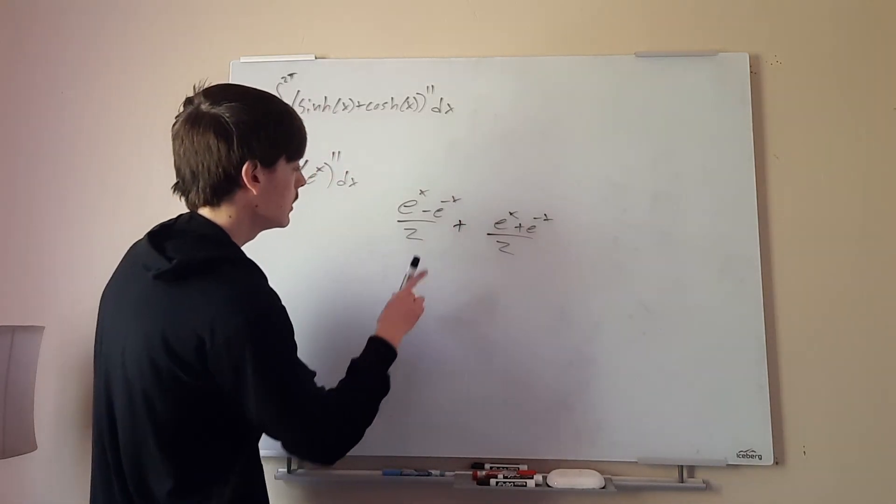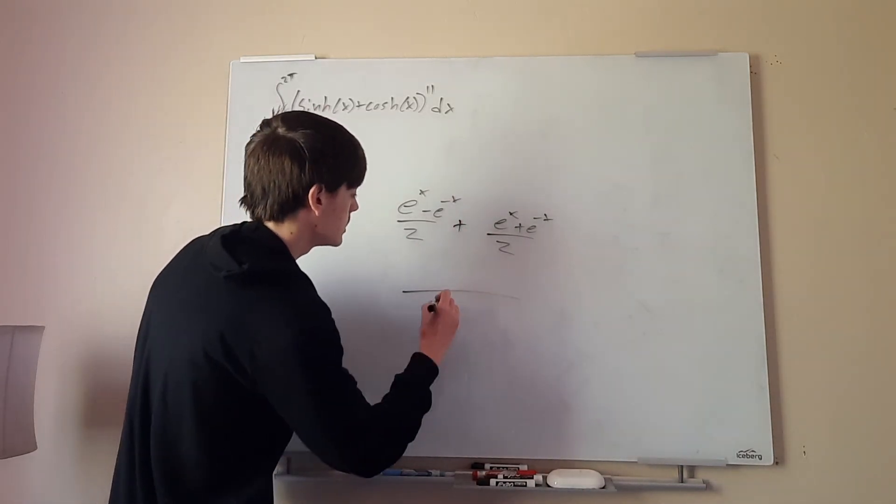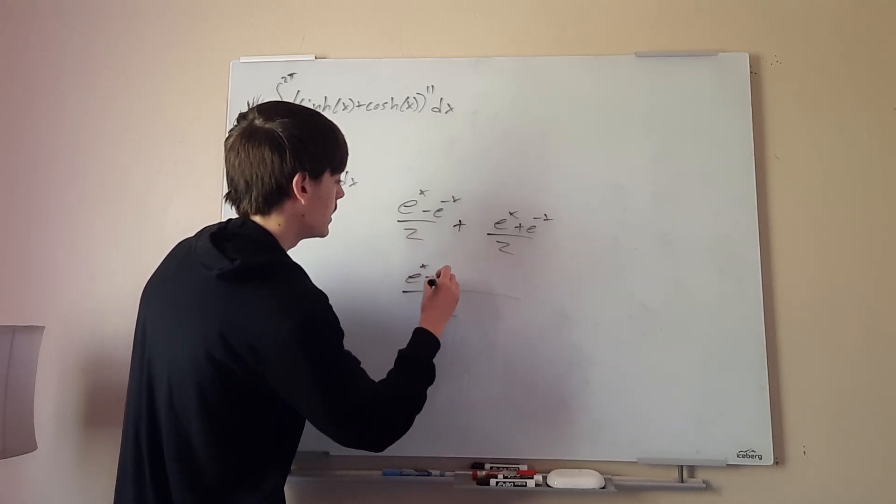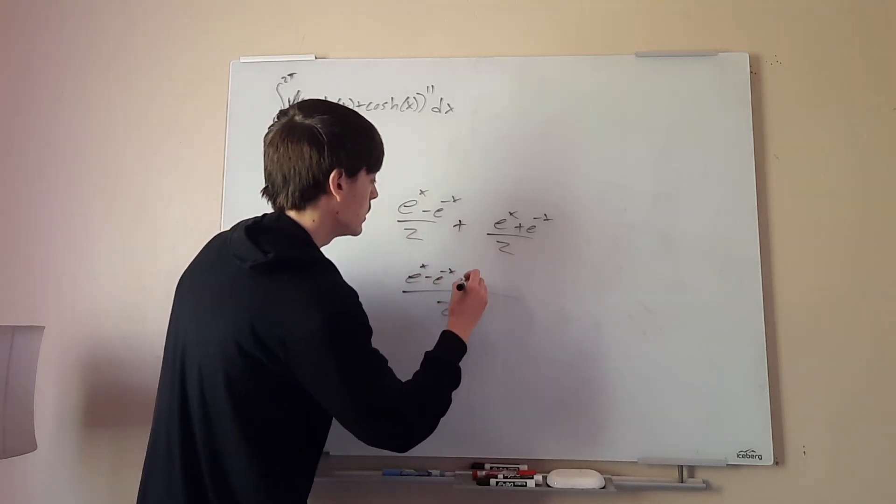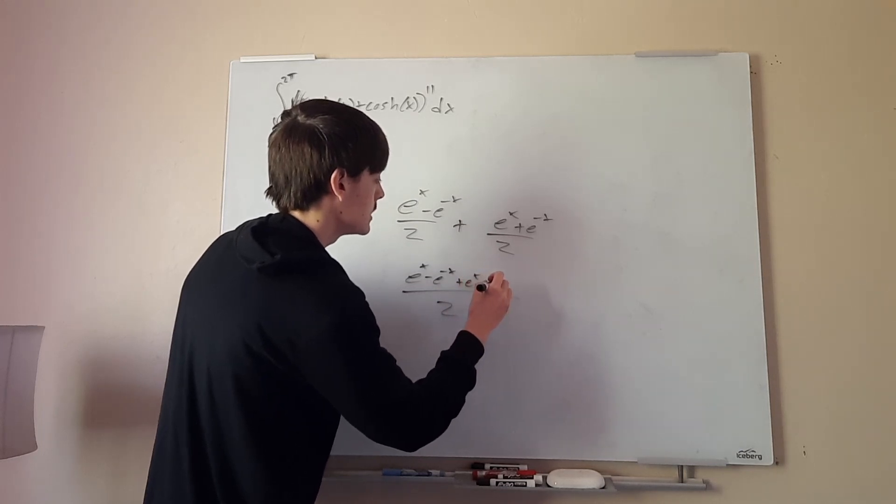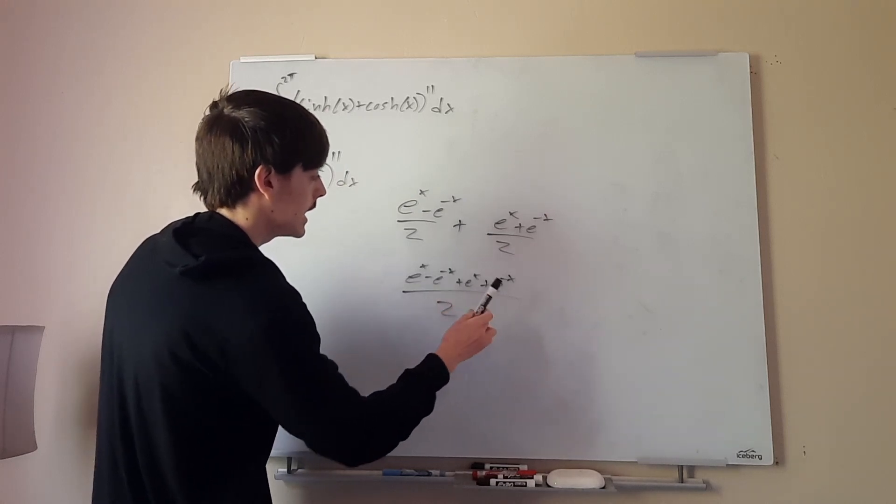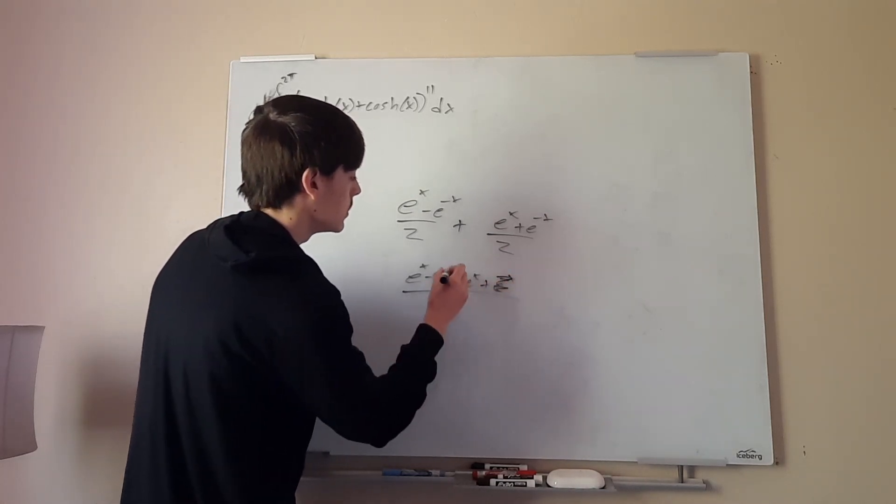If we're adding all these together, they have the same denominator, so it's just adding the terms all over 2. So (e^x - e^(-x) + e^x + e^(-x))/2. Notice we're subtracting and adding e^(-x), so these terms just go away.